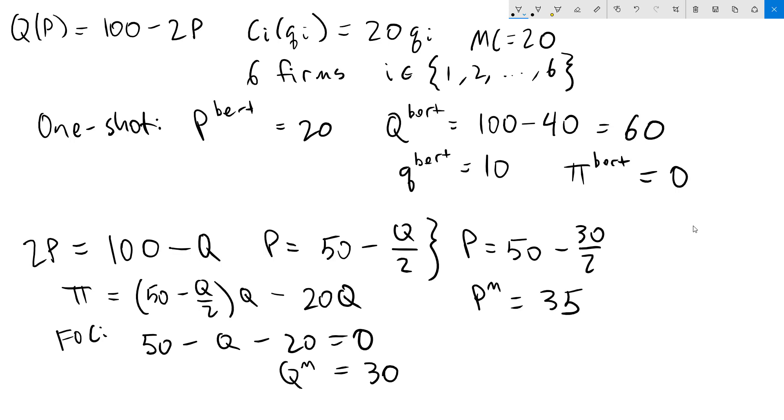If all six firms are able to collude, then they would all set a price of 35. According to the rules of the model, if they all set the same price, then they're going to split the output equally. Our total monopoly output is 30, so our collusive quantity is going to be 5. Profits that firms make from colluding, price times quantity, 35 times 5 minus cost, so 20 times 5, which gives us 75.